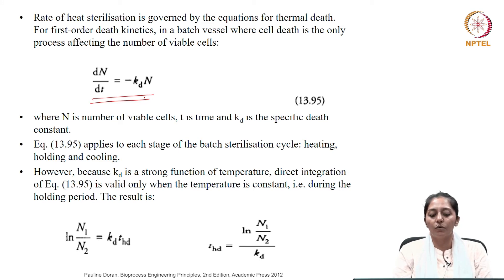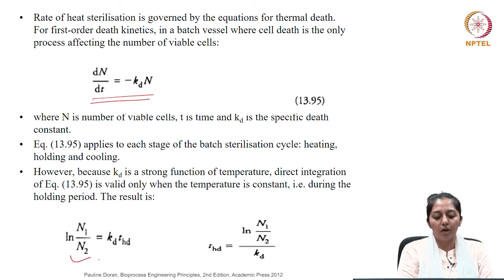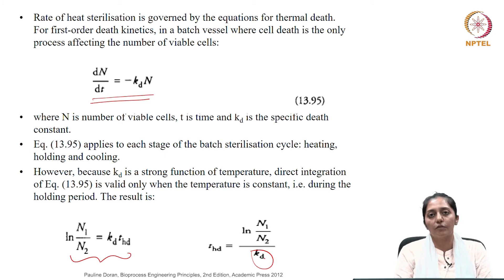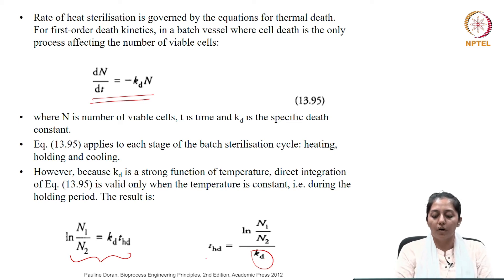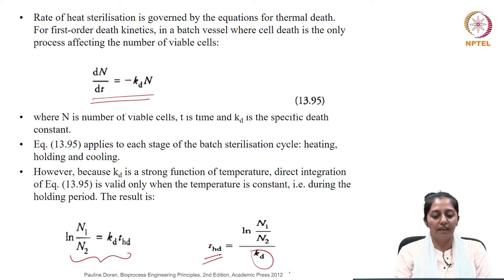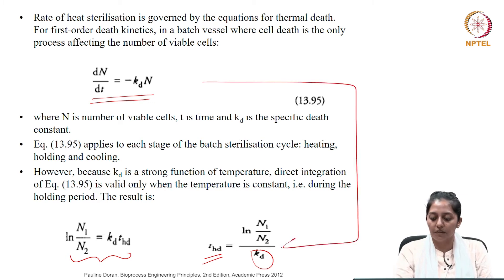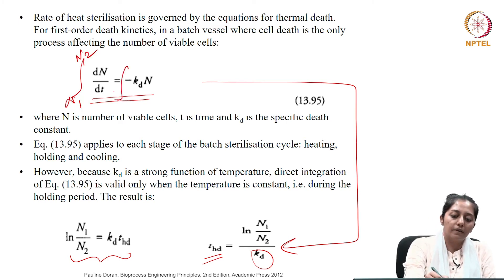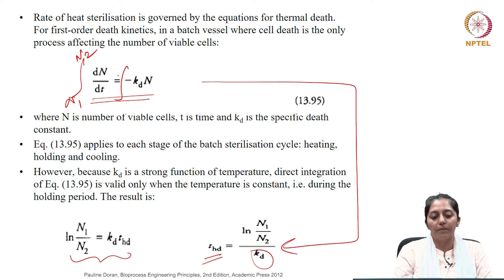However, during the heating and the cooling period, the temperature may not be constant but will be following a profile. Your holding time period can easily be obtained because K_d is constant there. If N1 is the number of viable cells remaining at the start of the holding period and N2 are the number of cells remaining at the end of the holding period, then the time for the holding period, written as T_HD, can be given as ln(N1/N2) divided by K_d. Once you integrate and put the limits N1 to N2, you can obtain the holding time in terms of K_d.